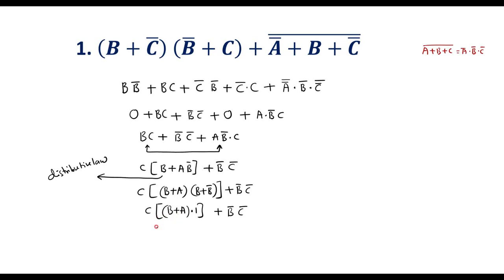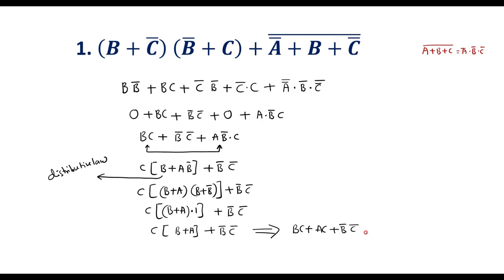So now from these two terms I take c common: c(b + ab̄) + b̄c̄. Applying distributive law to (b + ab̄) gives (b + a)(b + b̄) = (b + a)·1 = b + a. So the simplified expression is bc + ac + b̄c̄.